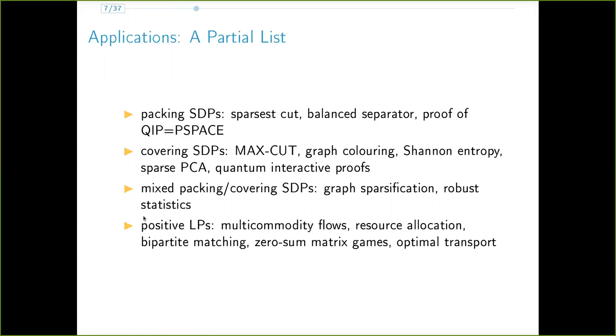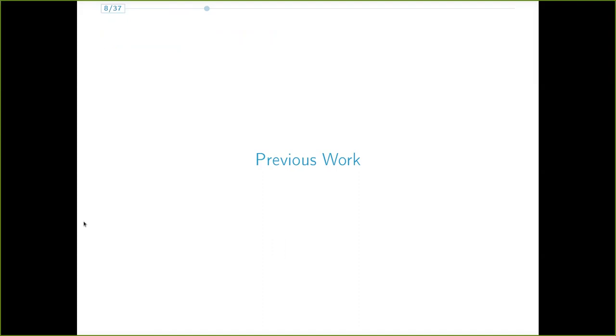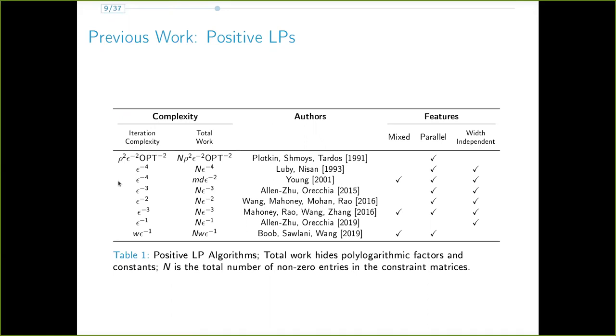Given the fundamental nature of this problem, it's not surprising to see that there has been quite a bit of work on it. Before looking at some previous work, I'll first describe the three features we care about in our work. The word mixed refers to problems with both packing and covering constraints. We call problems with only one of these constraints as pure packing or pure covering. The word parallel refers to algorithms that update the coordinates of x all at once. And the width of a positive LP refers to the largest absolute value of the entries of its constrained matrices.